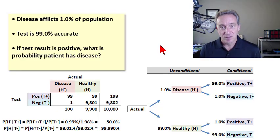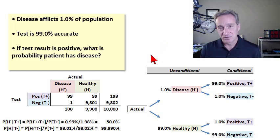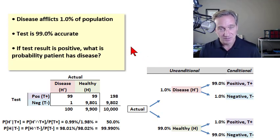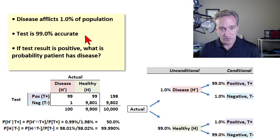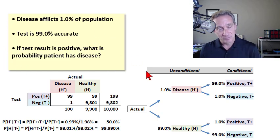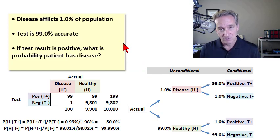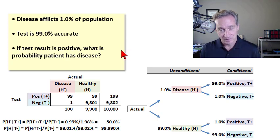To illustrate Bayes Theorem, I'll use an example from Miller's Chapter 6, which is assigned to FRM candidates. It's a classic example involving a medical test to diagnose whether or not a patient has a disease. It's a clever and realistic example because for most of us, our intuition about the correct answer is very different from the actual answer.